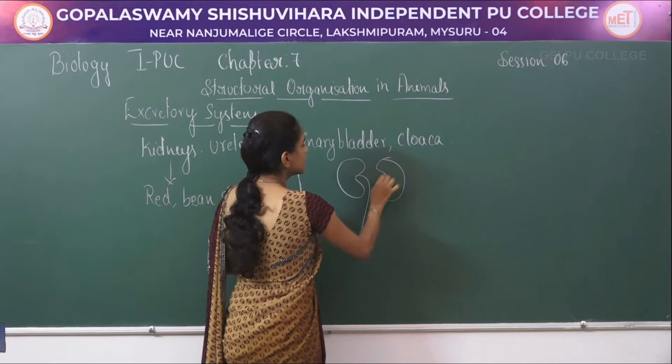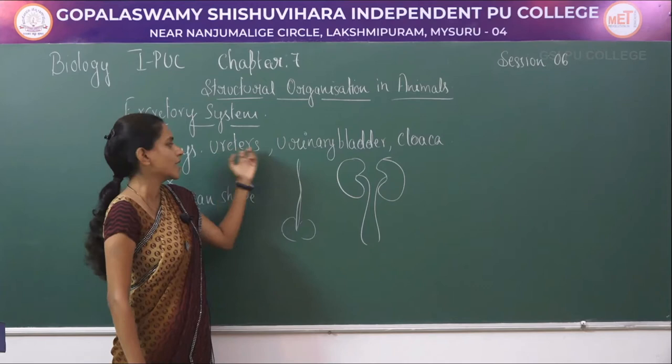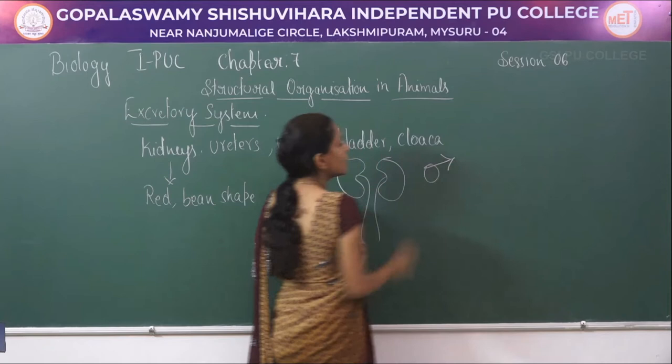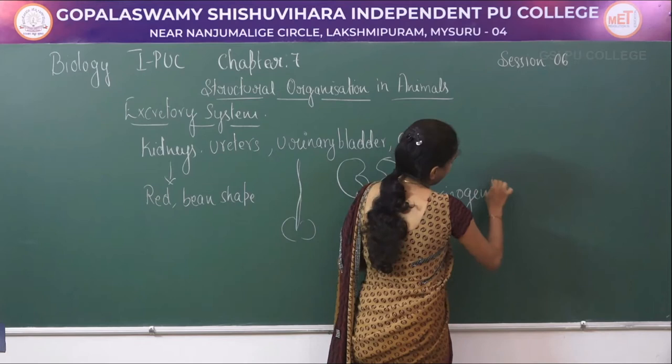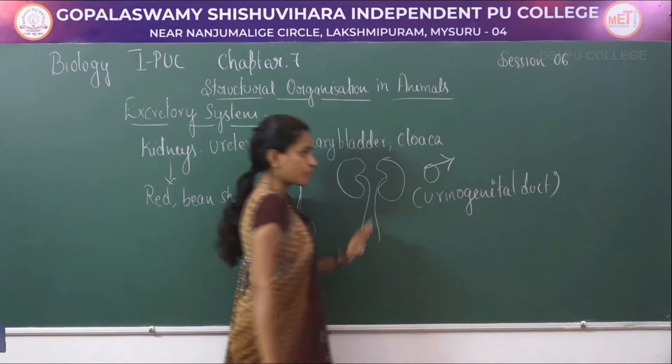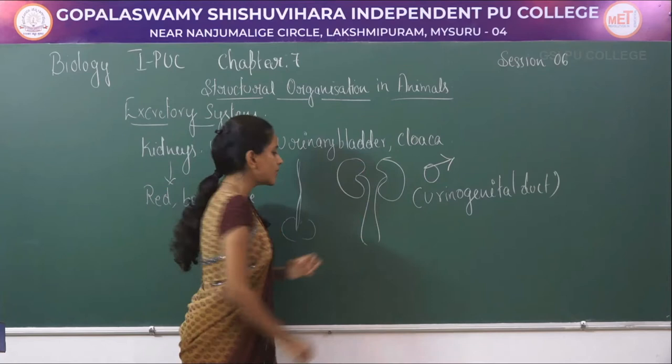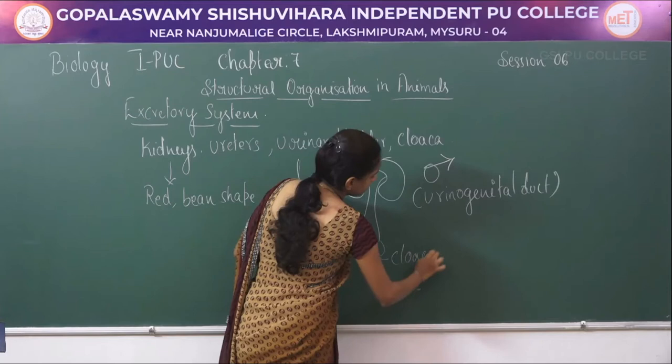From each kidney there are two tube-like structures coming out, called ureters. In the case of a male frog, the same ureter is considered to be a urinogenital duct, because it carries both urine and sperm. Both of these open up into a common opening called the cloaca.